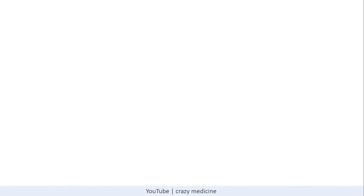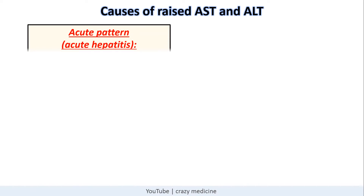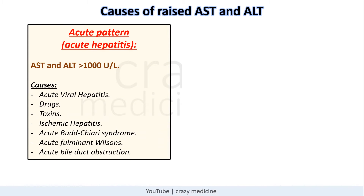Regarding the pattern of raised AST and ALT: in acute conditions like acute hepatitis, values may rise up to thousands. Causes include acute viral hepatitis, drug- or toxin-induced liver injury, systemic hepatitis, acute Budd-Chiari syndrome, acute fulminant Wilson's disease, or acute bile duct obstruction.